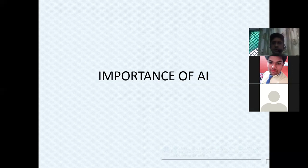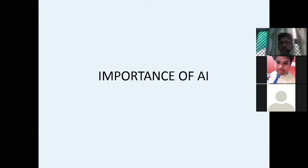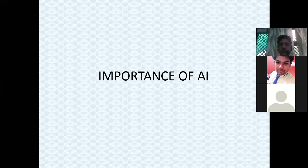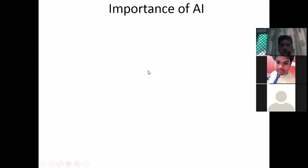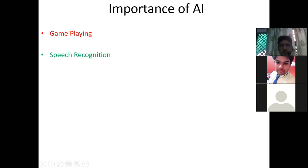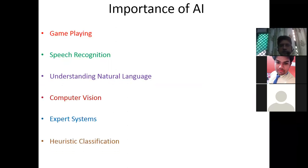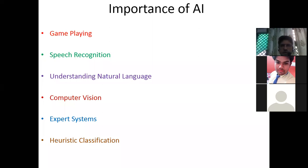Today's topic is the importance of artificial intelligence. We have a brief introduction of artificial intelligence, and today we will discuss what is the importance of artificial intelligence. The important areas include game playing like chess, speech recognition, understanding natural language, computer vision, expert systems, and heuristic classifications — these are some of the important areas where artificial intelligence can be made useful.